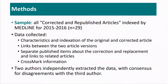The sample that we started with — we took 2015 and 2016 because those were the years where you would expect a pick-up of the ICMJE change in recommendations. So we took all corrected and republished articles indexed by Medline — there were 29 of them — and then we looked at the journals, three databases, and also CrossMark to see how they linked and indexed the retracted and the republished articles.